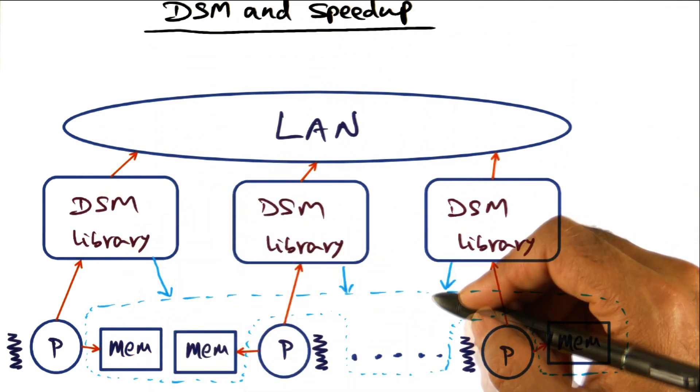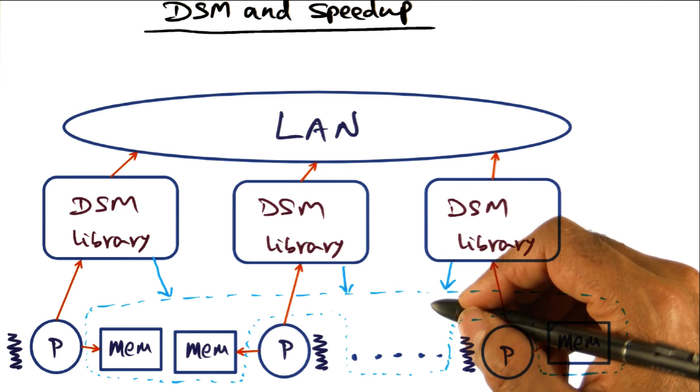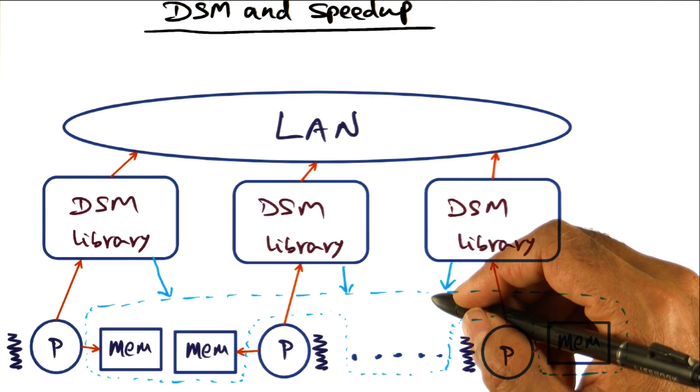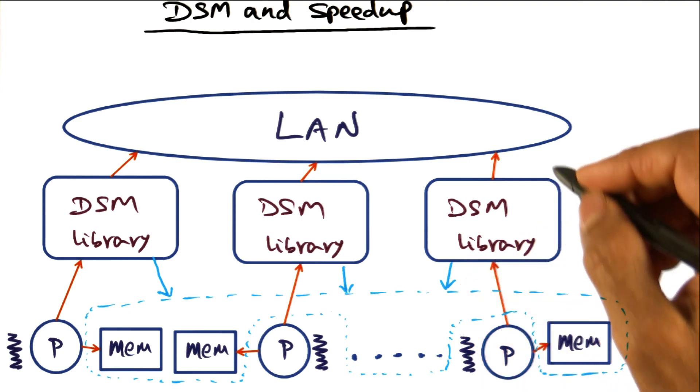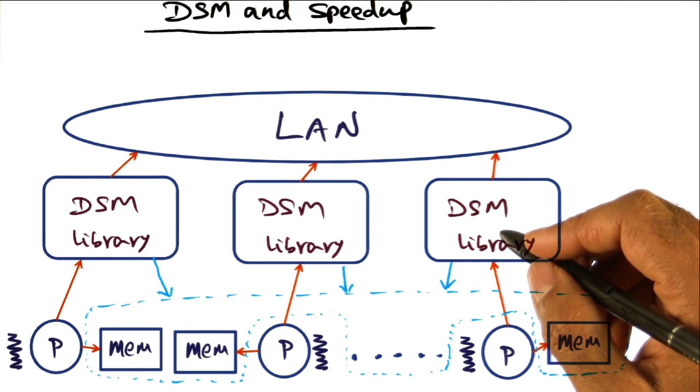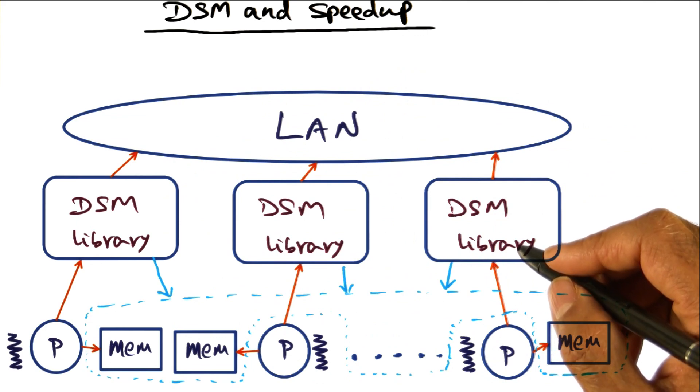This is the bane of distributed shared memory, that pointer codes may result in increasing overhead for coherence maintenance for distributed shared memory in a local area network. So you have to be very careful in how you structure codes that can execute efficiently in a cluster using DSM as the vehicle for programming.